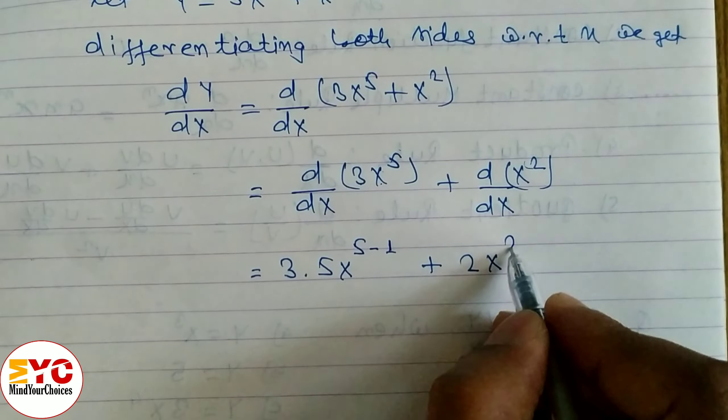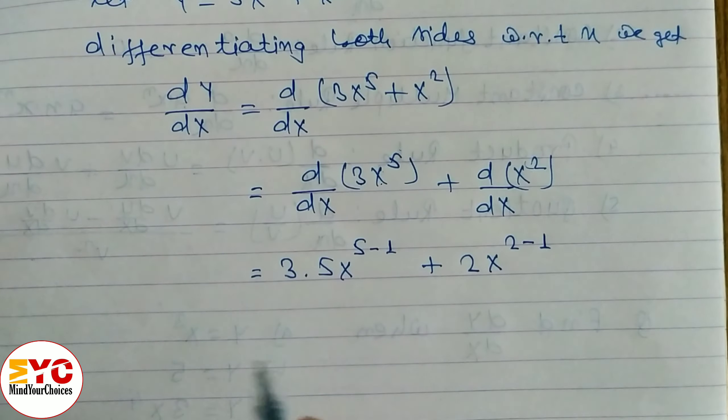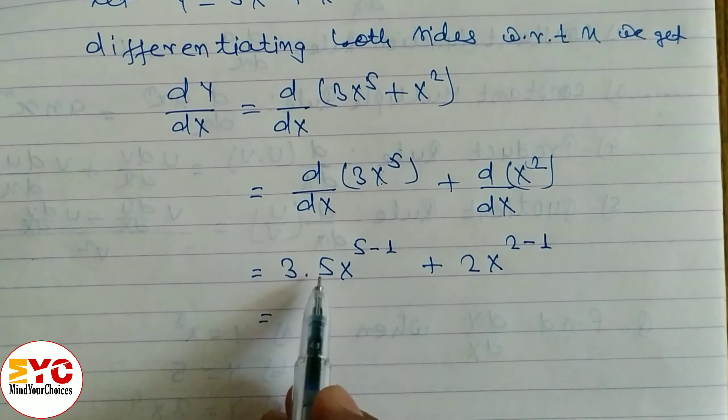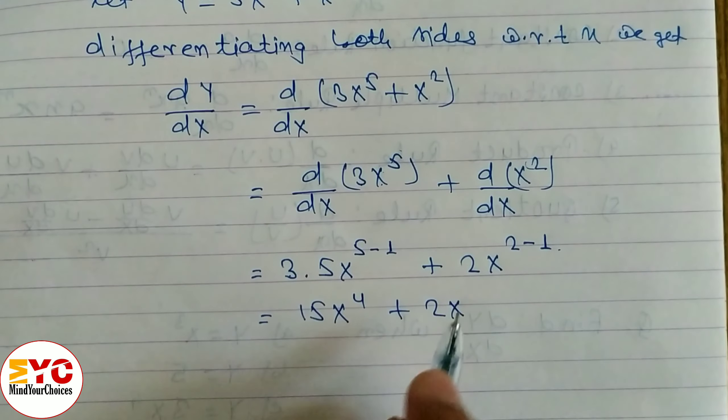from power we have to subtract 1 so 2 minus 1 using formula. Formula I already provided you before. Now multiply 5, 3 is 15, x power 4 plus 2 x power 2 minus 1 means 1. So answer